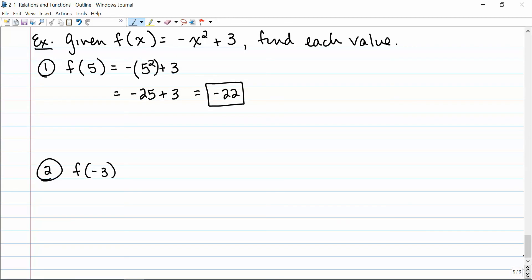And for my second example here, we have f of negative 3. So I have a negative and then I want a negative 3 squared plus 3. So that's going to give me negative 3 squared is a positive 9. So a negative 9 plus 3 gives me a value for this function of negative 6. So f of negative 3 is equal to negative 6.